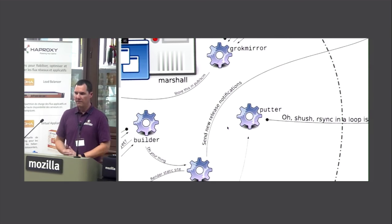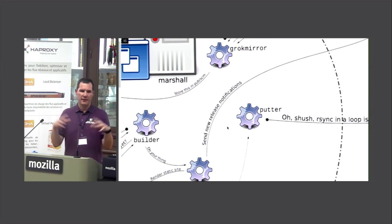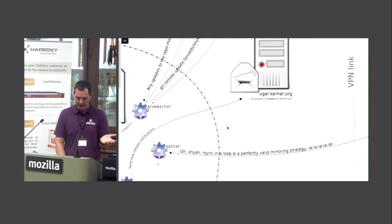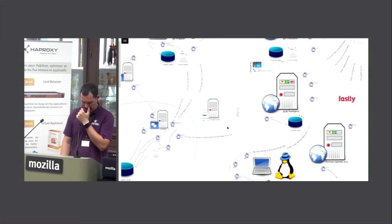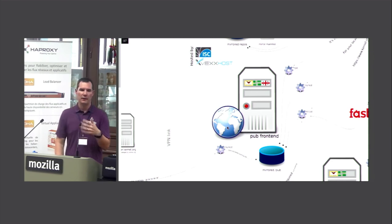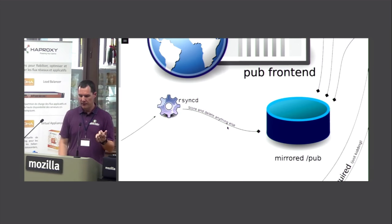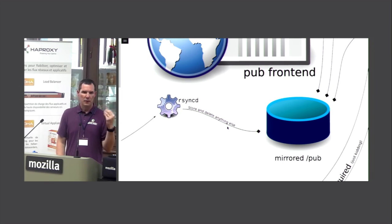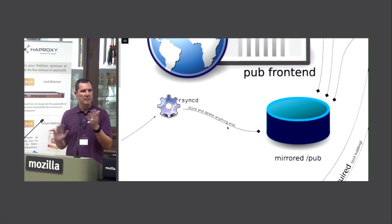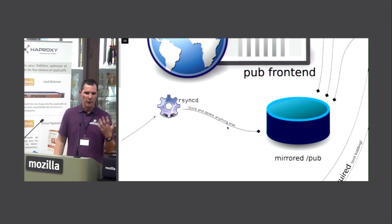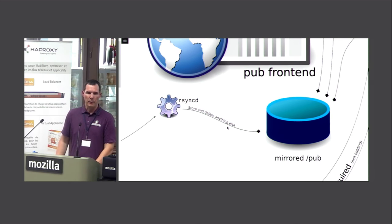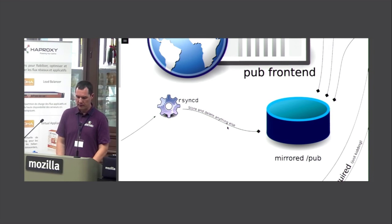The final step is the putter. Once everything is in pub master, the putter runs rsync in a loop to the pub front end. Rsync in a loop is a perfectly valid mirroring strategy — everything else is worse, believe me. The pub front end is another VM running on the same physical hardware as the git front end, hosted in those same three locations: San Francisco, Portland, and Montreal. Rsync stores new content and deletes everything else. It actually doesn't take that long. We'll probably revisit this and investigate better options for synchronizing remote directories.